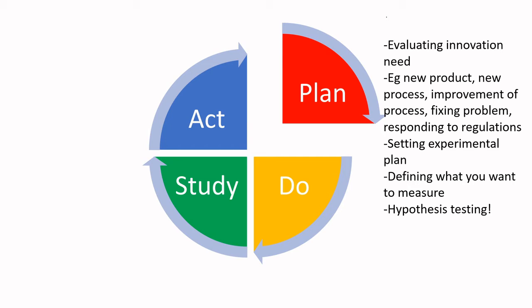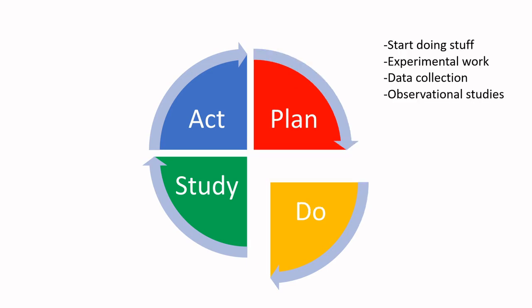The Do part is where you're starting to do stuff — doing experimental work, doing data collection, or in other cases, conducting observational studies. When I worked in an inspection agency in Canada, I often saw six sigma practitioners in manufacturing plants doing just that — standing on a stool or standing in place for hours with a clipboard. Employees would say 'what a waste of time,' but they needed to conduct those observational studies and collect data, often just watching and recording different behaviors, whether occurring or not.